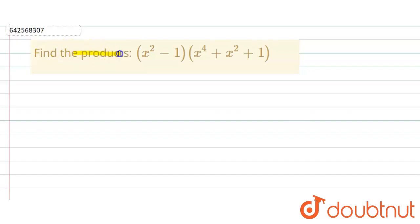In the given question, we have to find the product of this algebraic expression. The expression is x squared minus 1 into x raised to power 4 plus x squared plus 1.